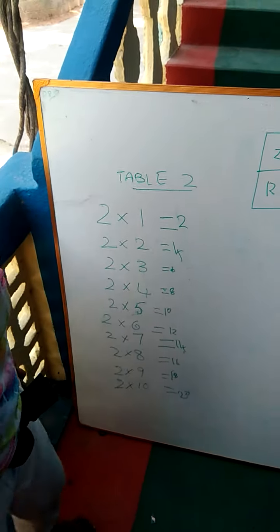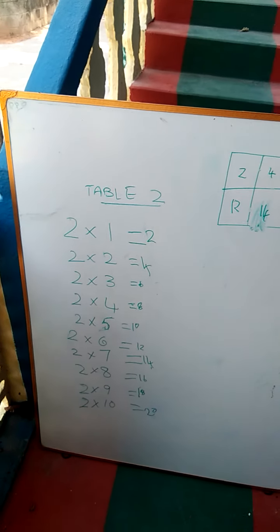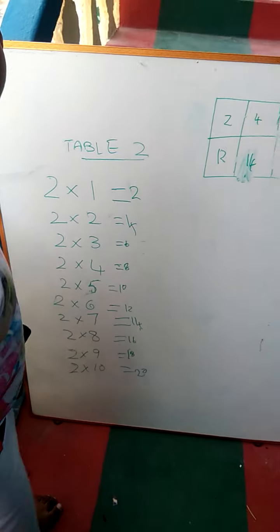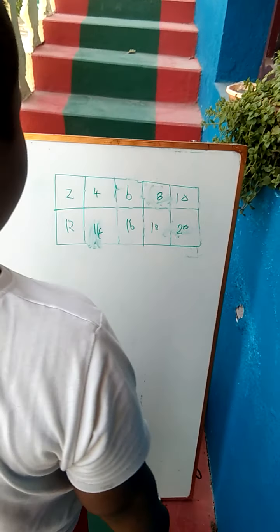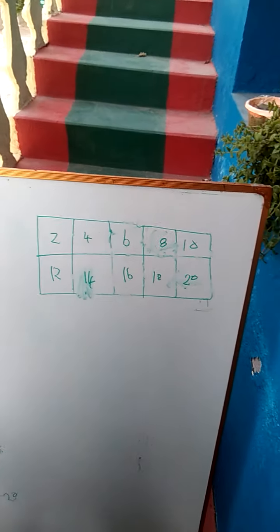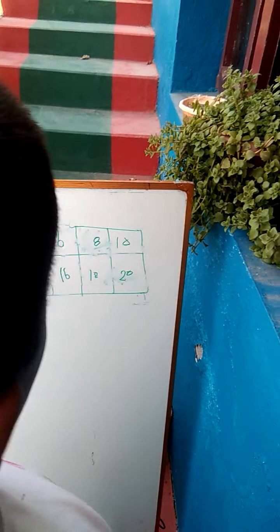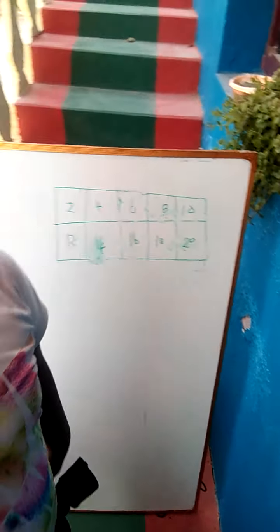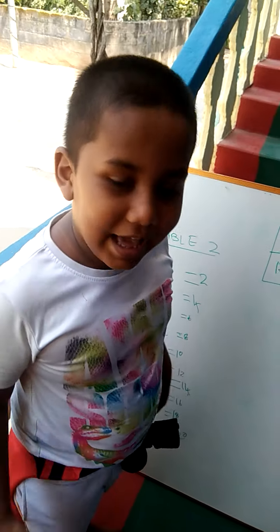So, learning two tables is easy. Take all alternate numbers and write. Two, four, six, eight, ten, twelve, fourteen, sixteen, eighteen, twenty. Okay. Thank you.